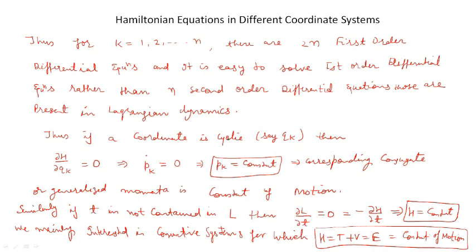Now if a coordinate qk is cyclic, then we can write del H over del qk equal to 0, just as in the Lagrangian we had del L over del qk equal to 0. So when del H over del qk is equal to 0, from the Hamiltonian equation pk_dot will be equal to 0.